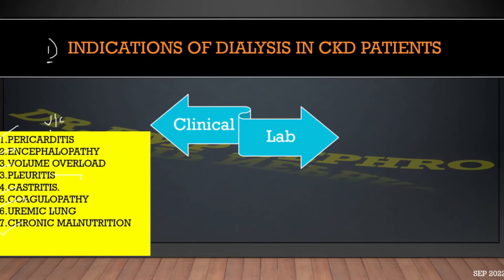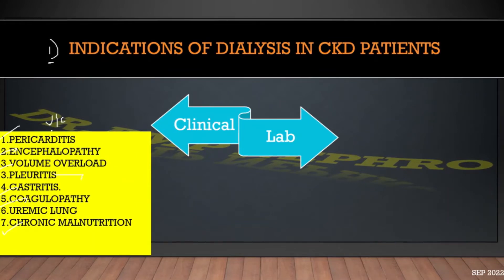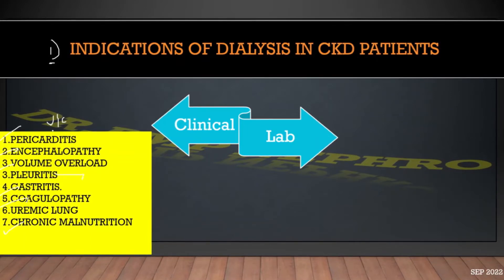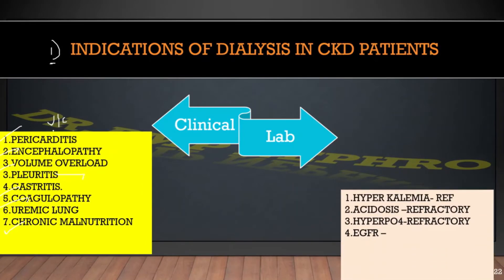Other clinical indications include uremic lung, uremic gastritis, uremic coagulopathy, or even chronic malnutrition. There is no urea or creatinine cutoff, but these manifestations are more common as urea starts rising above 190 to 200. These are the clinical indications for starting dialysis in a CKD patient. How to rule out other conditions such as encephalopathy will be covered in a separate video.